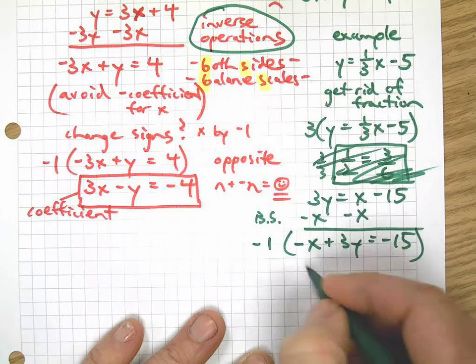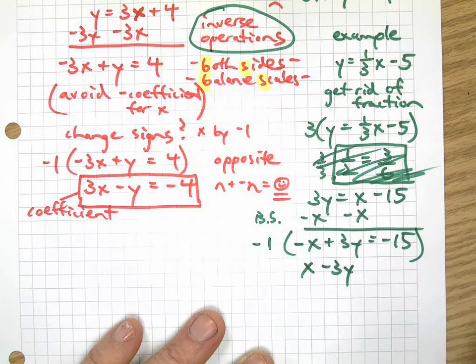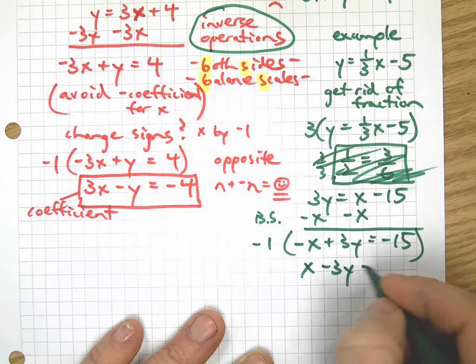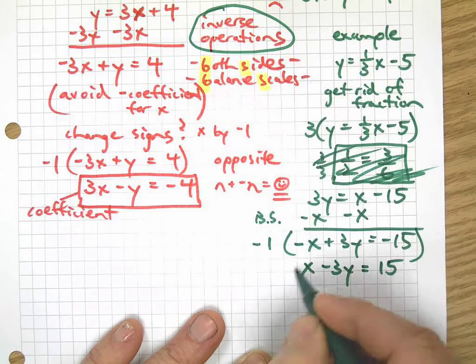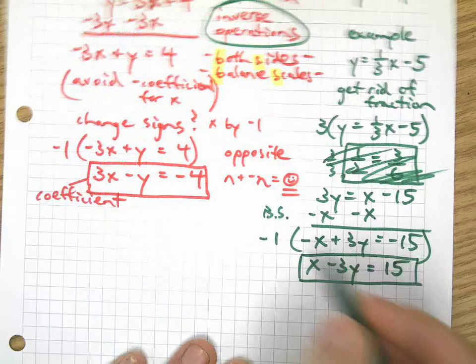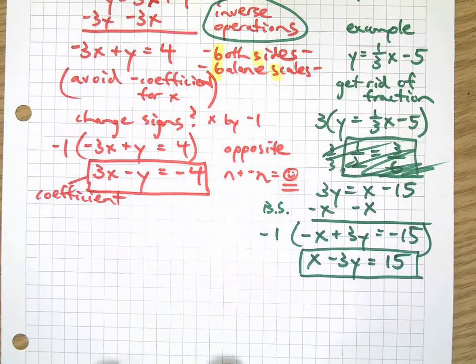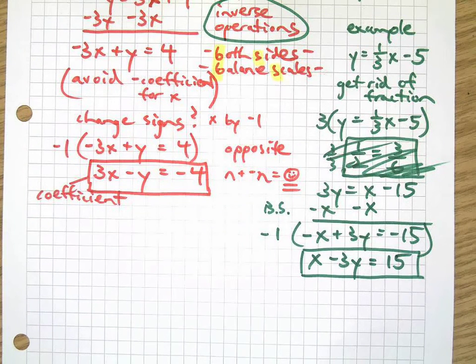We don't like that negative sign, so we're going to change signs of everything, which means multiply by negative 1, and I get positive x, negative 3y, and positive 15. There we go.